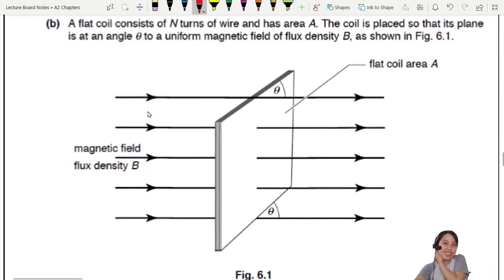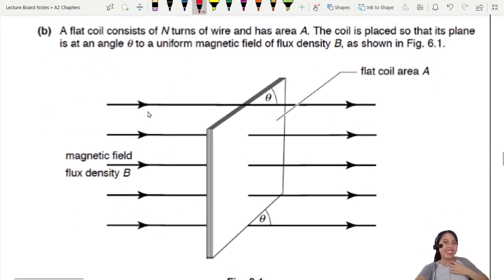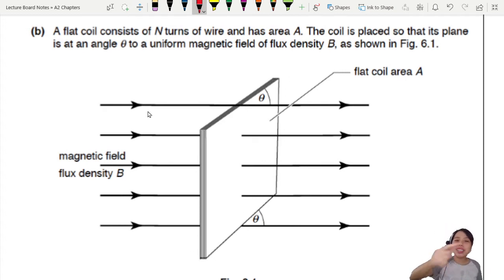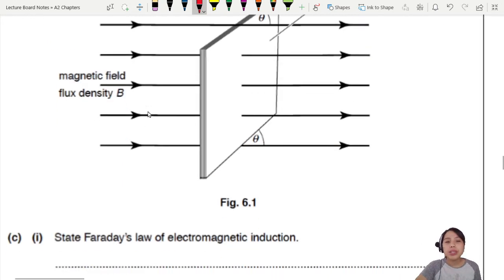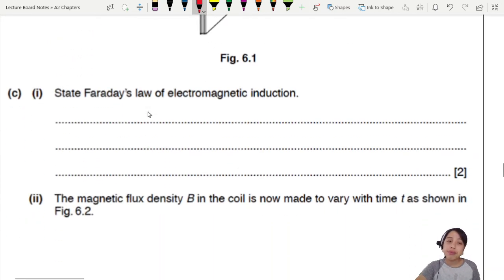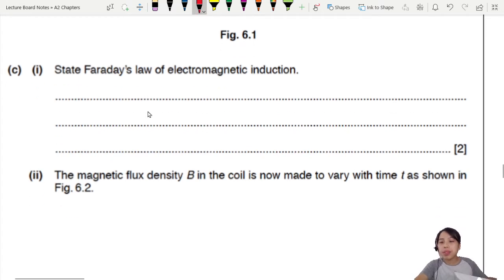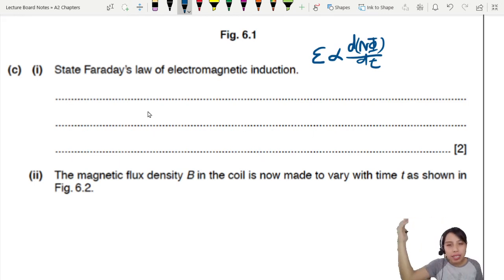Next. Aha, here we come to the coil. Looks very familiar. We discussed this earlier. A flat coil have N turns of wire and has area A. The coil is placed so that its plane is at an angle. So what's changing? State Faraday's law of electromagnetic induction.